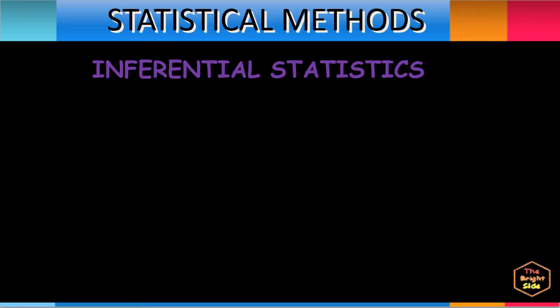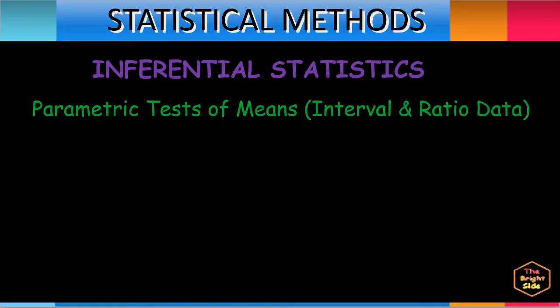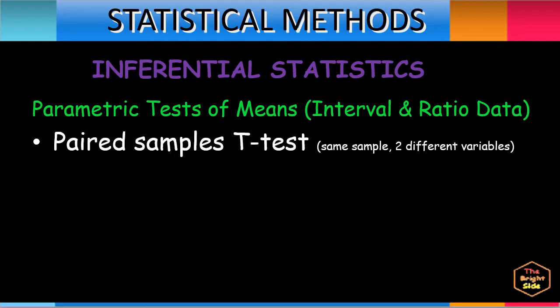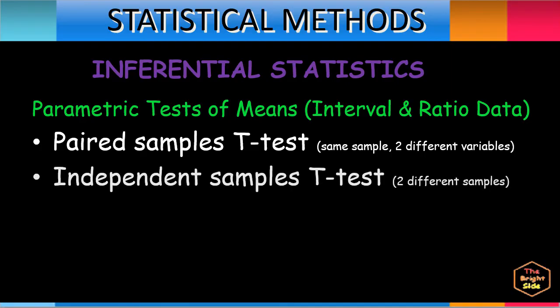Under inferential statistical methods, we also have parametric tests of means for interval and ratio data. The paired samples t-test is used to compare two sample population means where both samples consist of the same test subjects. This test allows a researcher to conclude that the mean of a variable from one sample is greater or lesser than another variable from the same sample. The independent samples t-test is used to compare two sample population means where both samples consist of distinct test subjects, allowing a researcher to conclude that the mean of a variable from one sample is greater or lesser than another variable from a different sample.